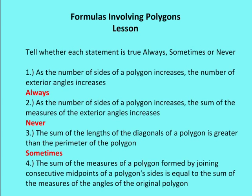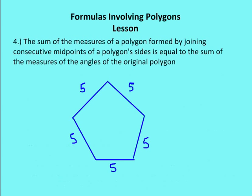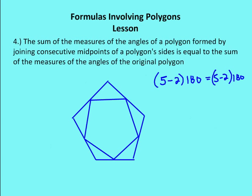Moving on: the sum of the measures of a polygon formed by joining consecutive midpoints of a polygon's sides is equal to the sum of the measures of the angles of the original polygon. The answer to that is always. It's always going to be the case because the polygon formed has the same number of sides as the original — the exterior polygon has five sides and the interior polygon also has five sides, so the sum of the interior angles of both polygons is exactly the same.